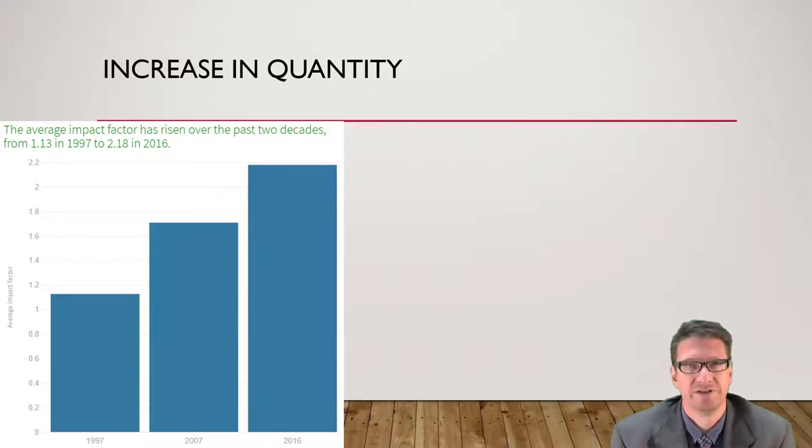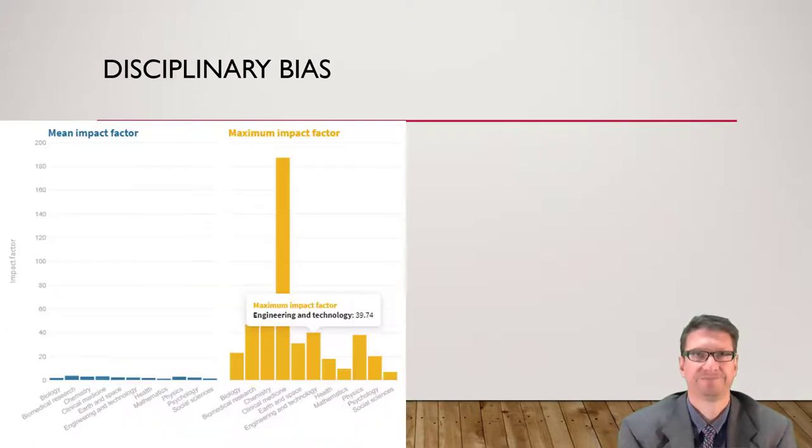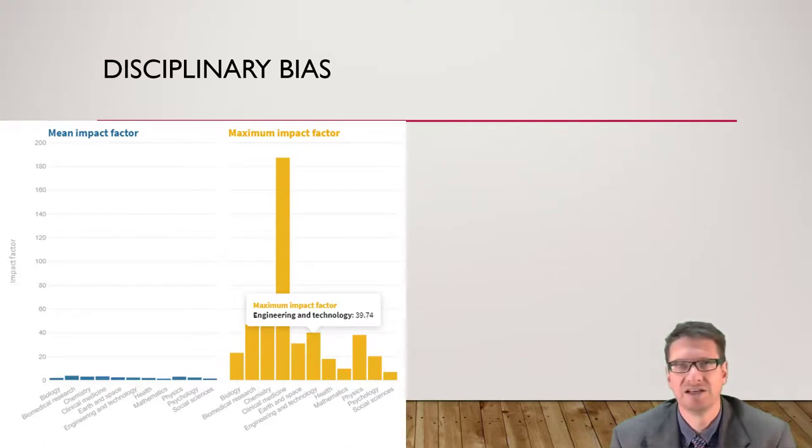Let's look at some disciplinary bias again. You can see that clinical medicine is way off the charts in terms of impact factor for journals. Engineering and technology is respectable but you can see again that the medical fields are dominating. Chemistry, it's the same kind of thing. There's a lot of interest, a lot of energy, a lot of money that goes into those fields. That's where the publications are.